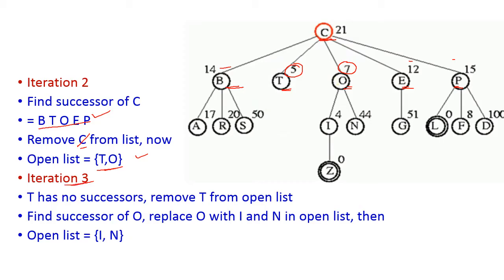In iteration 3, the first node in the open list is T. T has no successors because it is a leaf node, so we remove T from the open list. The open list now contains only O. We expand O, whose neighbours are I and N. We replace O with I and N in the open list. The new open list contains I and N.